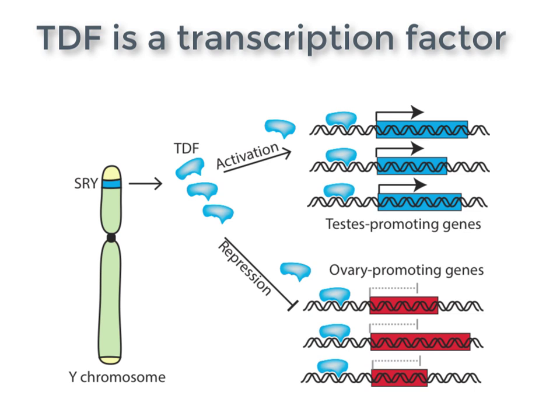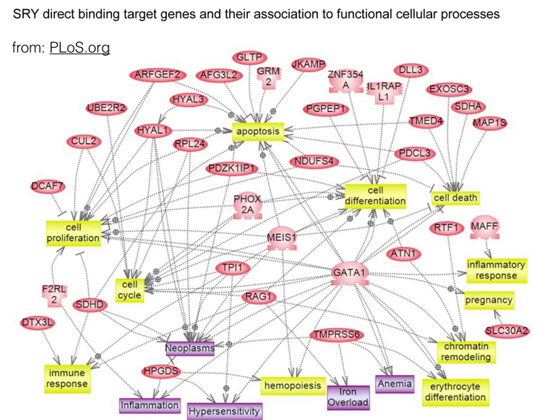This discovery indicates that a single gene is responsible for switching the developmental path from the basal female pattern to the male pattern. TDF is a transcription factor and a master regulator. It binds DNA and affects the expression of multiple genes near the binding sites. The image is simply meant to convey how a single master regulator gene action can cascade to affect many processes.